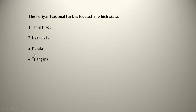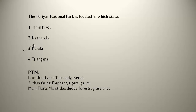The Periyar National Park is located in which state? Looking at the options, it is in South India — the answer is Kerala. Its location is near Thekkady, Kerala. The three main fauna are elephants, tigers, and gaurs, which are found in large numbers. The main flora are moist deciduous forest and grasslands. Do remember: Periyar is in Kerala.